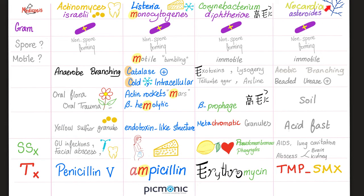Nocardia — look at those thin filaments that resemble the hyphae of fungi. It is a gram-positive rod, non-spore-forming, immotile, strictly aerobic, branching, and beaded. Urease-positive — capable of converting urea into ammonia. Nocardia lives in the soil. It causes signs and symptoms especially in immunocompromised patients, including lung abscess, cavitary lung lesions, brain abscess, kidney abscess, skin infections, and mycetomas. Treatment is TMP-SMX.